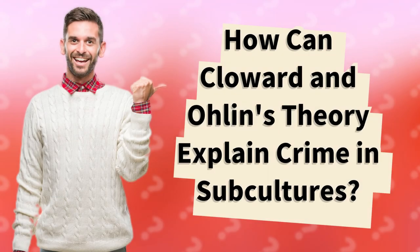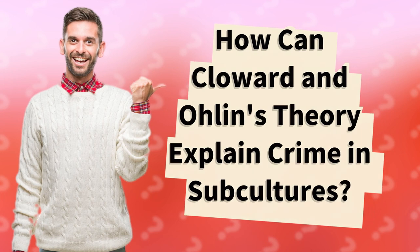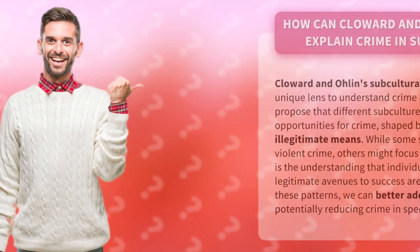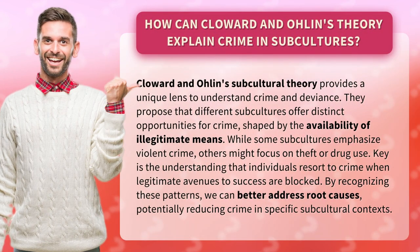How can Cloward and Ohlin's theory explain crime in subcultures? Their subcultural theory provides a unique lens to understand crime and deviance. They propose that different subcultures offer distinct opportunities for crime, shaped by the availability of illegitimate means.